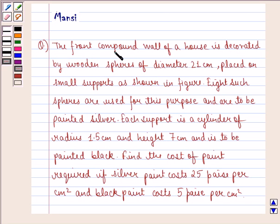The question says, the front compound wall of a house is decorated by wooden spheres of diameter 21 cm, placed on small supports as shown in figure. Eight such spheres are used for this purpose and are to be painted silver. Each support is a cylinder of radius 1.5 cm and height 7 cm and is to be painted black. Find the cost of paint required if silver paint costs 25 paise per cm² and black paint costs 5 paise per cm².